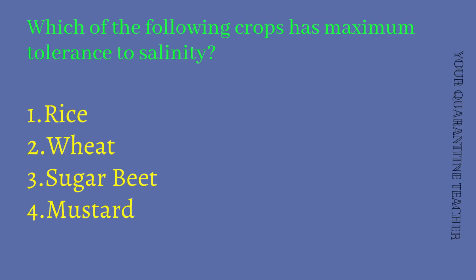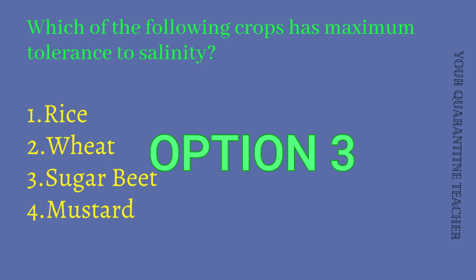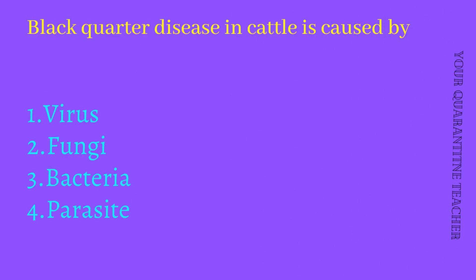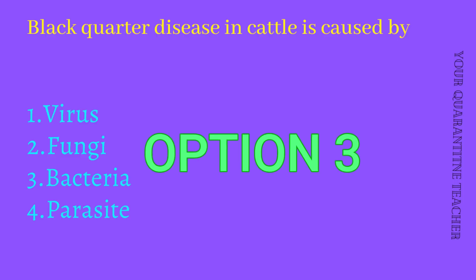Which of the following crops has maximum tolerance to salinity? Option 1 Rice, Option 2 Wheat, Option 3 Sugar Beet, Option 4 Mustard. The answer is Option 3 Sugar Beet. Then, Blackwater disease in cattle is caused by Option 3 Bacteria — correct answer.